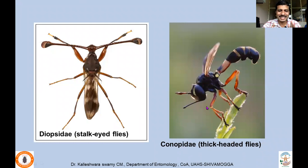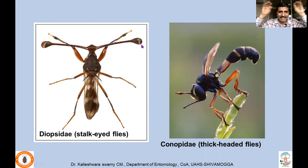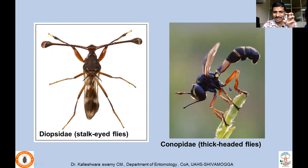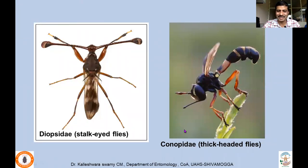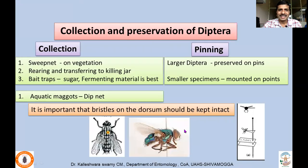Two families notable for their characteristic features: Diopsidae — stalk-eyed flies — have eyes placed on stalks extending from the head. Conopidae — thick-headed flies — at first look resemble wasps but are dipterans with only the front wings well developed.